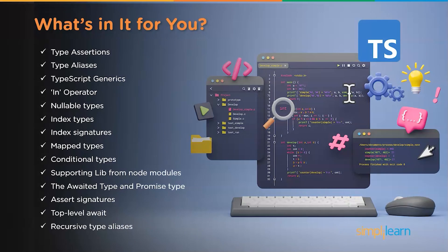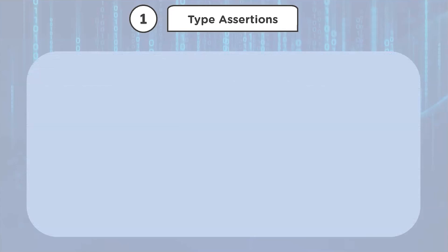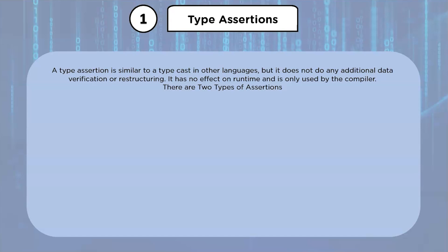We'll first look at type assertions. Type assertion is similar to type cast in other languages, but it does not do any additional verification or restructuring. It has no effect on runtime and is only used by the compiler. TypeScript expects that you, the programmer, have completed the necessary and specific checks.